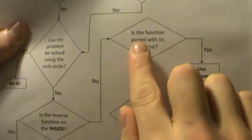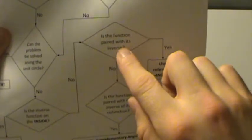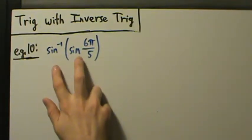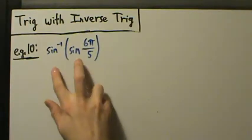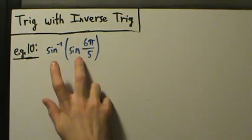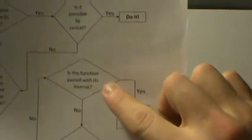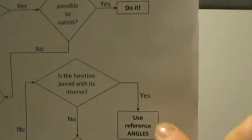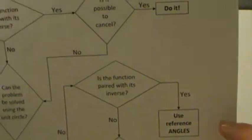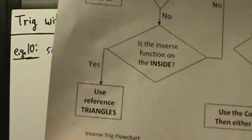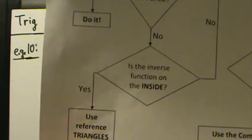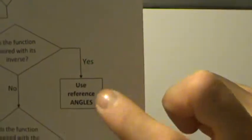Is the function paired with its own inverse? Notice we actually asked this question before, but we have to ask it again, because once we make it this far, it depends whether or not the function is paired with its own inverse — that's going to affect what happens next. Is the function paired with its own inverse? Yes — sine is paired with inverse sine. So we use reference angles. Notice that's different from examples 8 and 9, where we used reference triangles. Here in example 10, we're going to use reference angles.